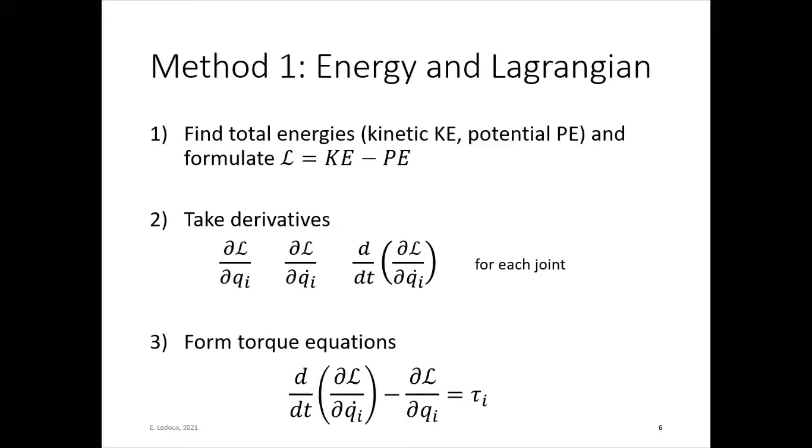Method one uses energy and Lagrangian. So first, find total energies, kinetic and potential, and then formulate the Lagrange equation: kinetic minus potential energies. So next you take the derivatives. ∂L/∂q, so that's a derivative with respect to position. ∂L/∂q̇, which is the derivative with respect to velocity. And then you take the time derivative of the velocity derivative. You do that for each joint, put them together, and form the torque equations. So you will have one torque equation for every joint.